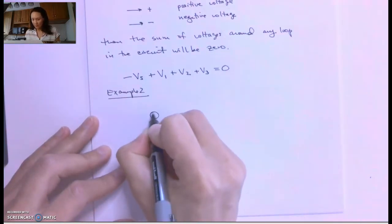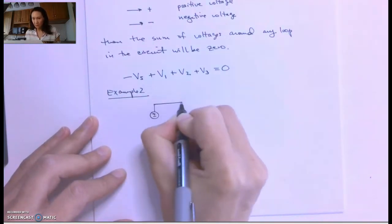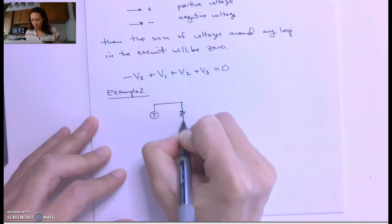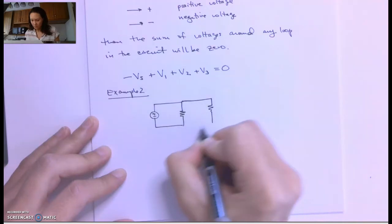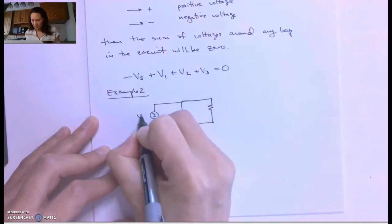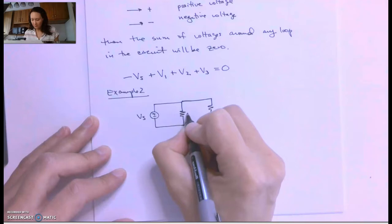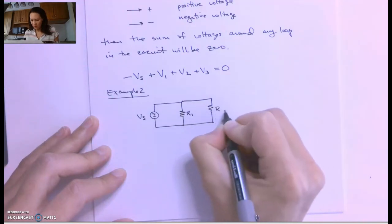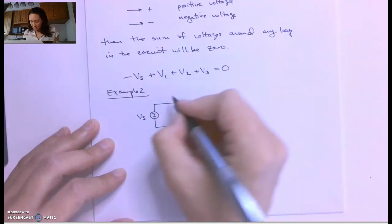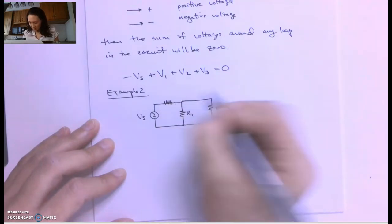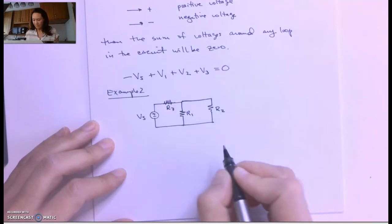Suppose we have a circuit that has two branches. We can again name this Vs. We'll call this R1, we'll call this R2. And just to make it interesting, maybe I'll put another resistor up here. We'll call this R3.